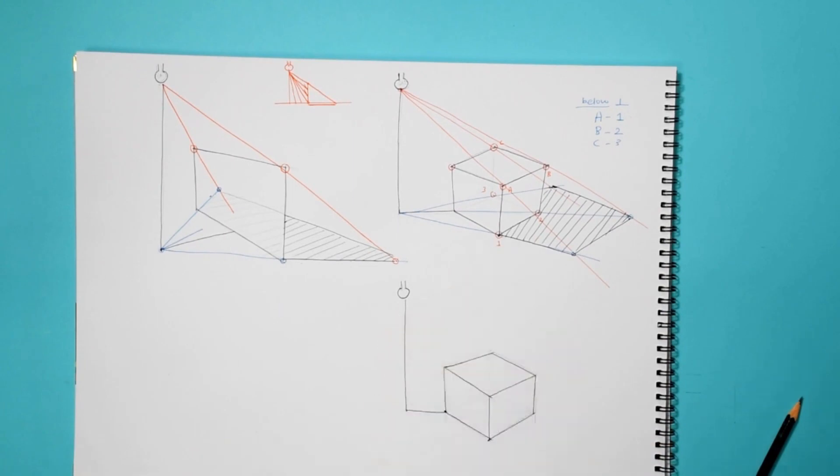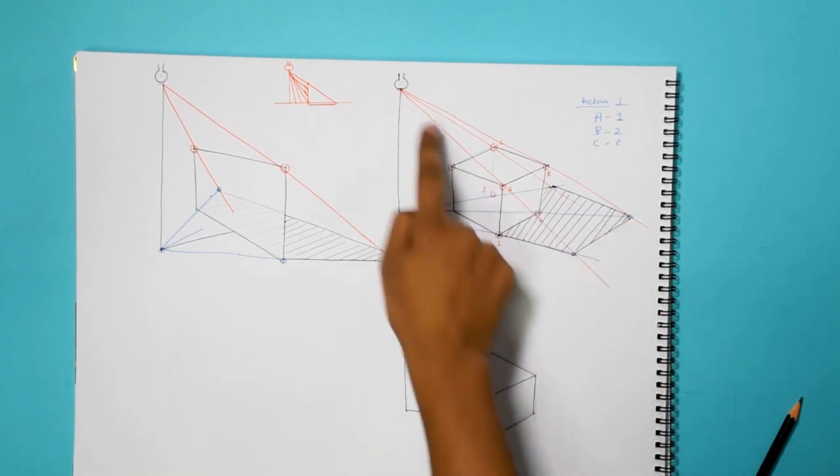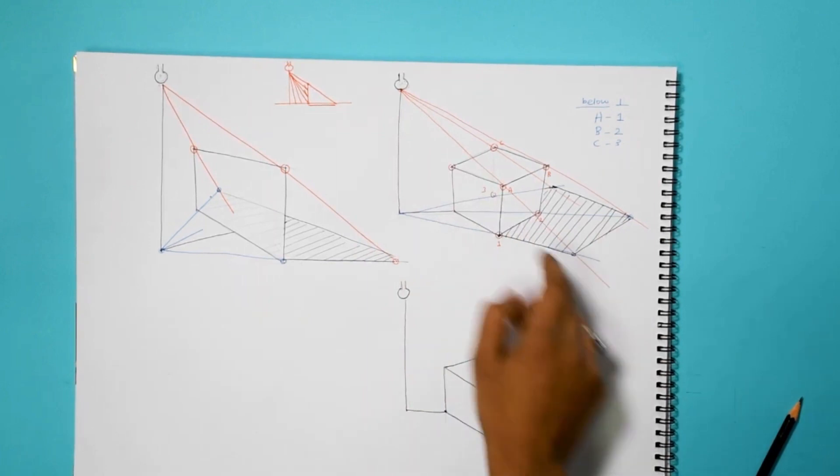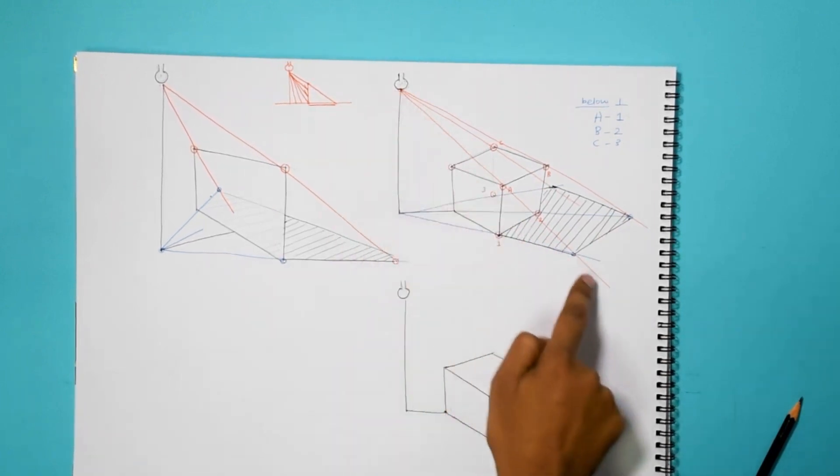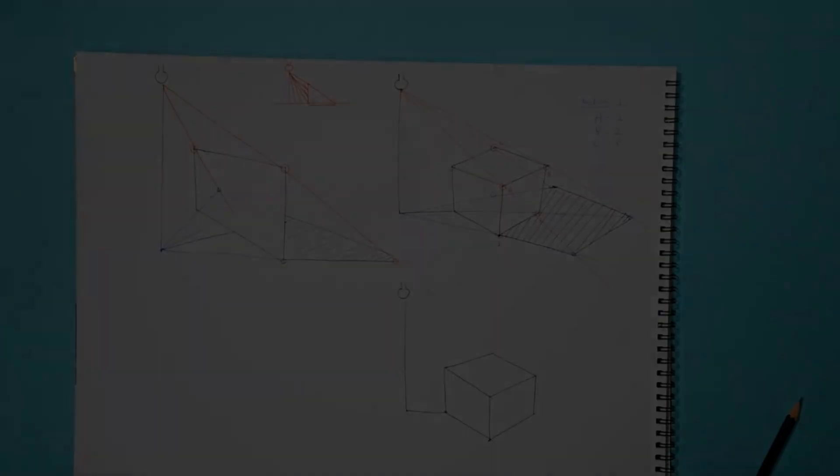I'll also tell you one more trick. Just like this one, here we took the references from below and then above line to check where the ray of light would fall on the ground. I'll tell you one more trick.